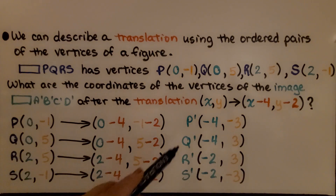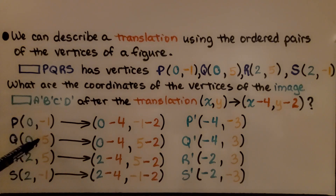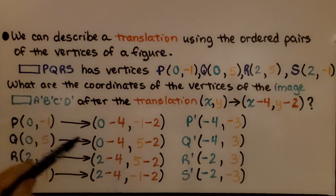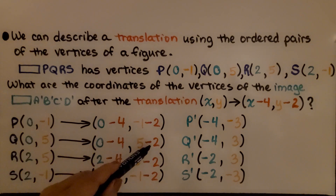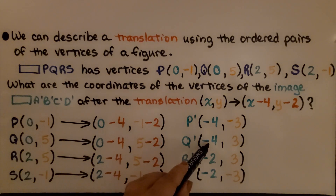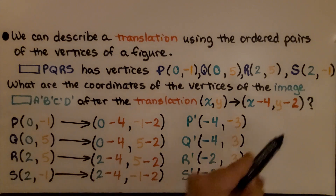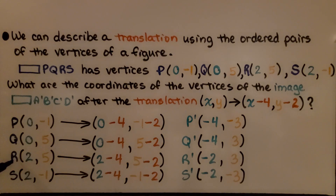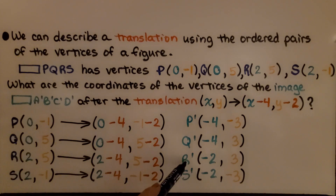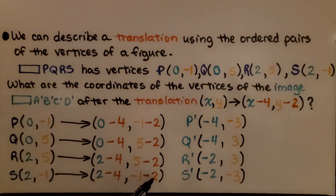Following this rule, Q at (0, 5) translates to (0−4, 5−2), so Q prime is at (−4, 3). Notice that all x values are subtracting four and all y values are subtracting two. R at (2, 5) translates to (2−4, 5−2), so R prime is at (−2, 3). S at (2, −1) translates to (2−4, −1−2), so S prime is at (−2, −3).